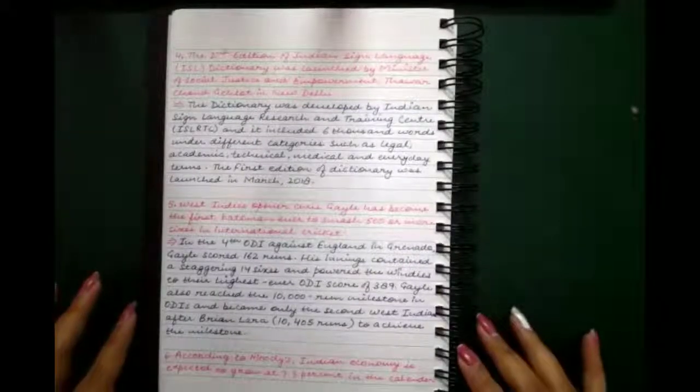Fifth, West Indies opener Chris Gayle has become the first batsman ever to smash 500 or more sixes in international cricket in the fourth ODI against England in Grenada. Gayle scored 162 runs.